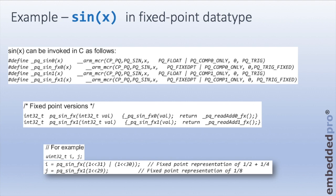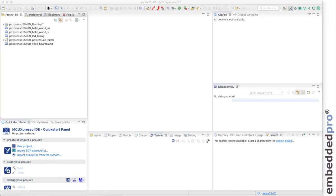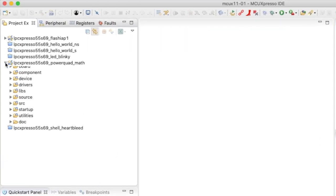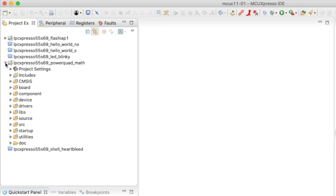The MCR instruction's first parameter specifies which coprocessor to target — in this case, the Power Quad. Next is an opcode interpreted by the coprocessor to know which instruction to execute, in this case the sine instruction. The data is provided in fixed-point and the result is returned in fixed-point. There's been a lot of theory today, so let's look at one of the SDK example projects: power_quad_math, which provides examples of all the functions that can be submitted to the coprocessor Power Quad.